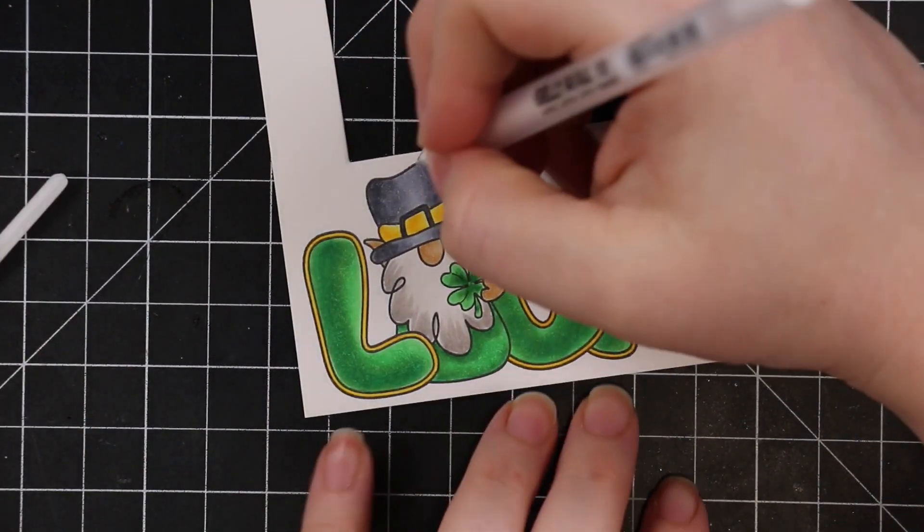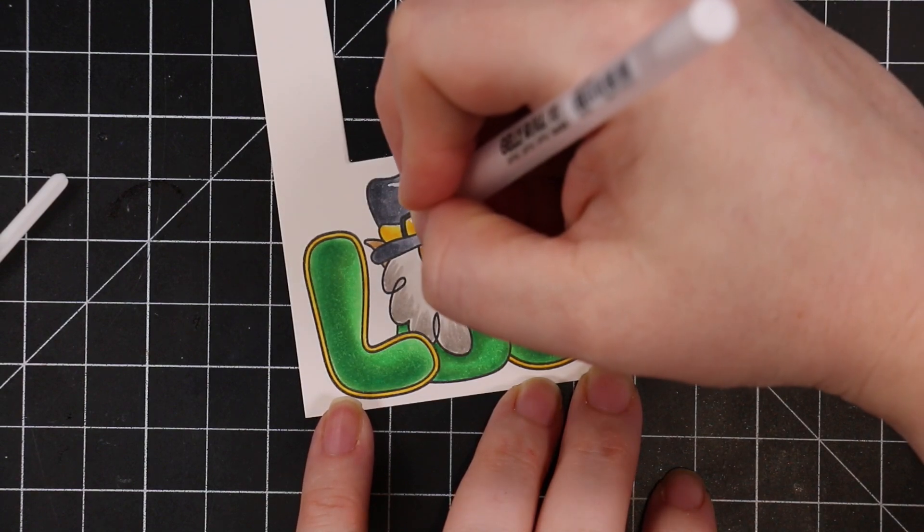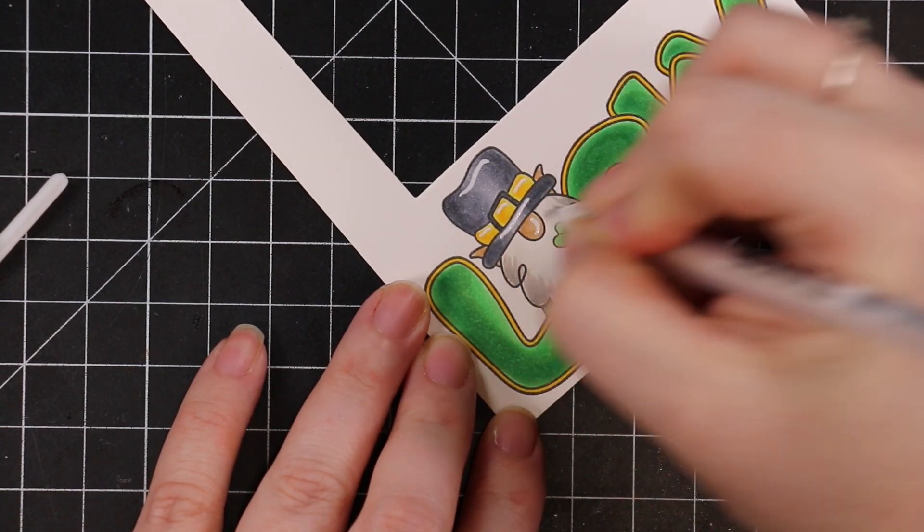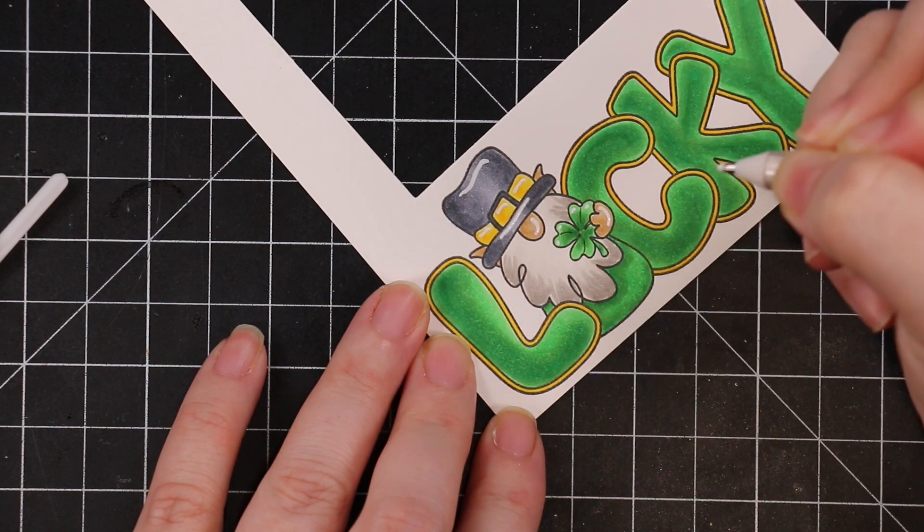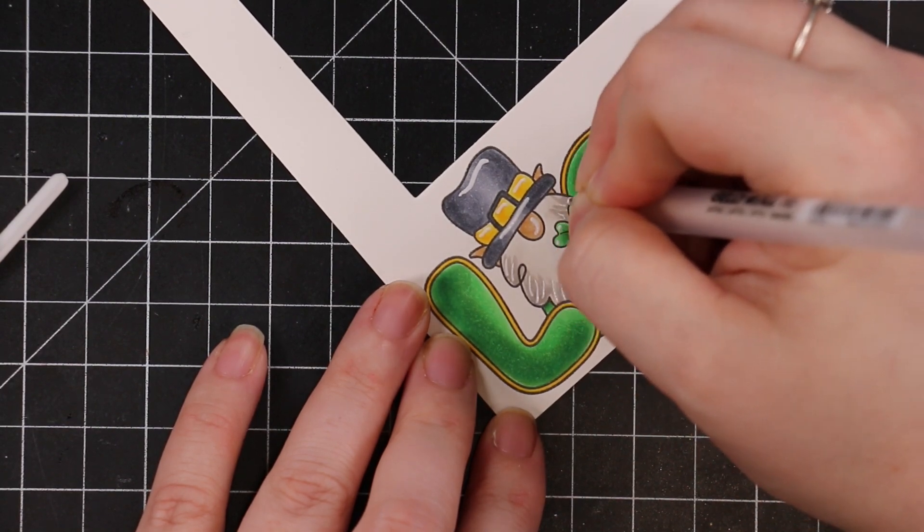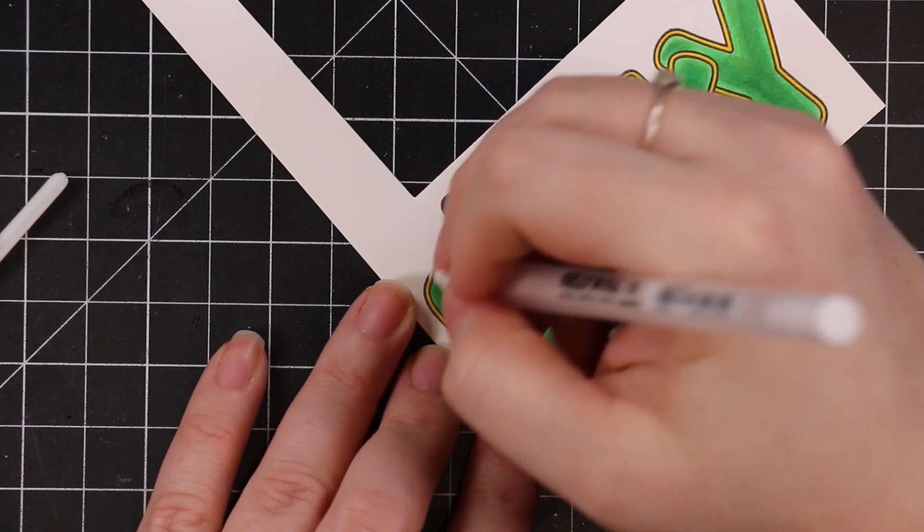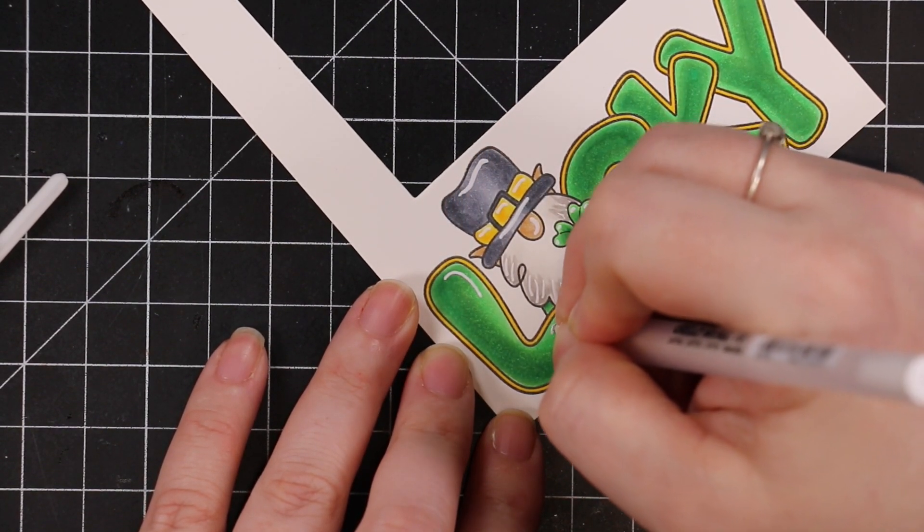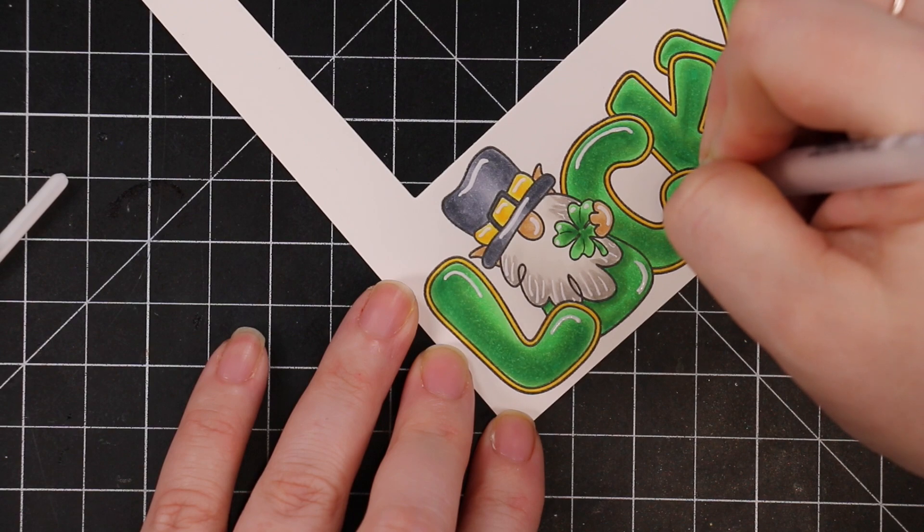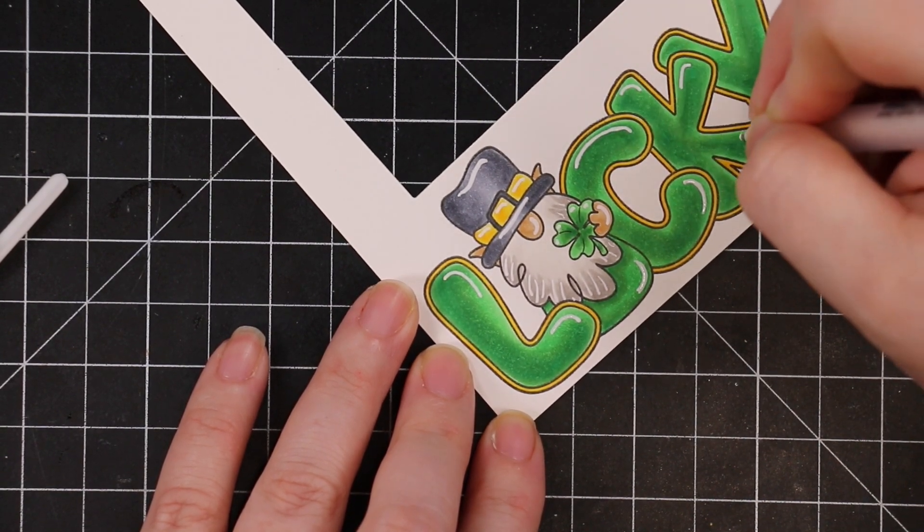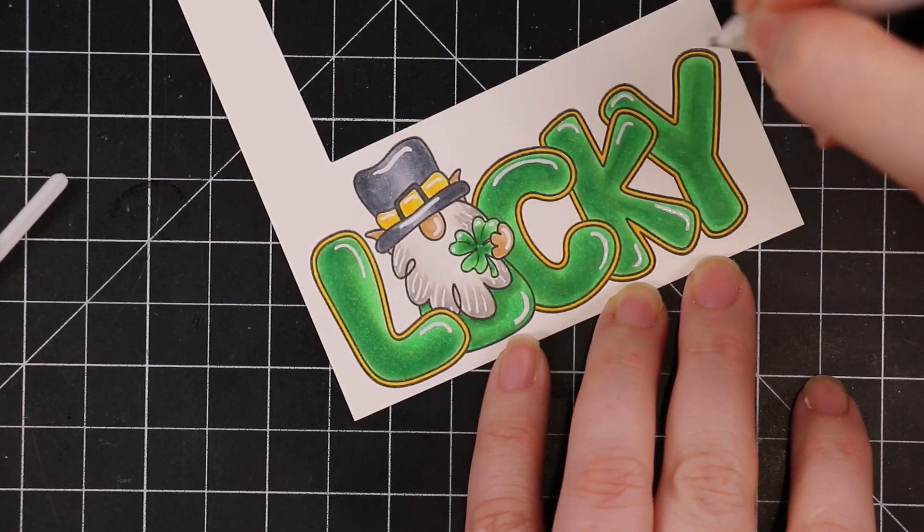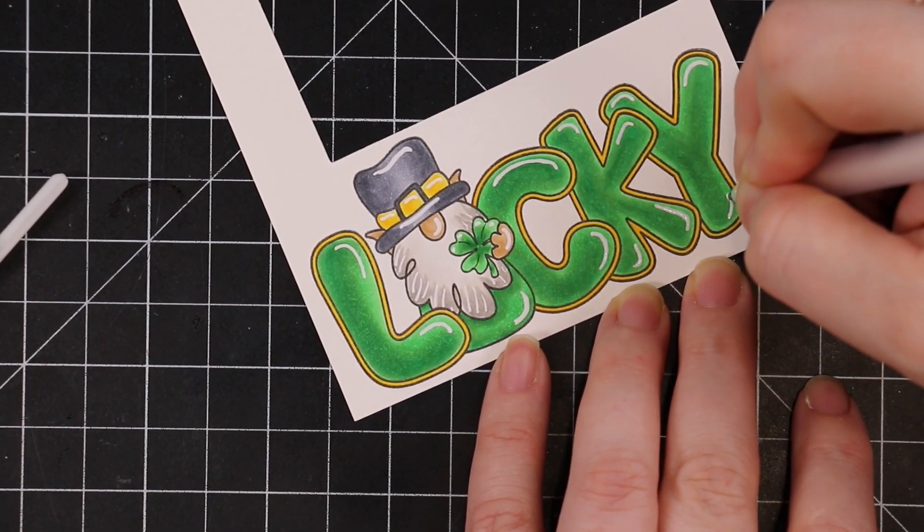I used Y19 for all the outlines. I'm not going to do any shading on those outlines because they're so thin and narrow. I finished coloring the rest of the letters off camera, then pulled out my favorite white gel pen, my Jelly Roll 10, and added highlights. I don't follow any reference for lighting or shadows, I just add them wherever I think they'll look nice.